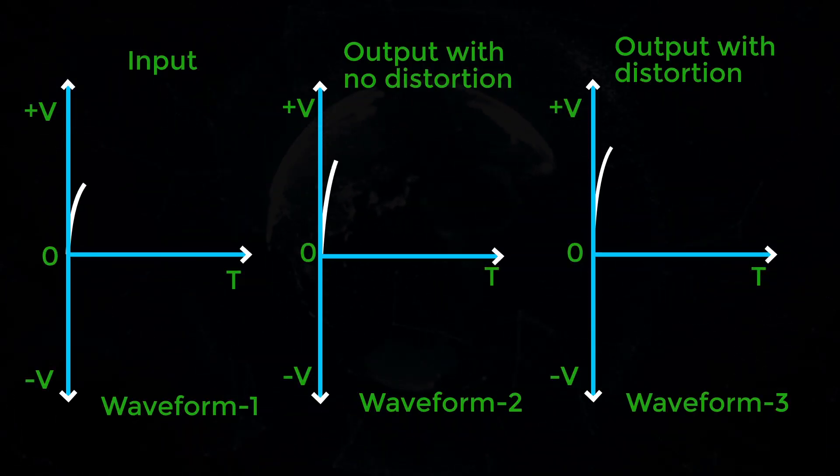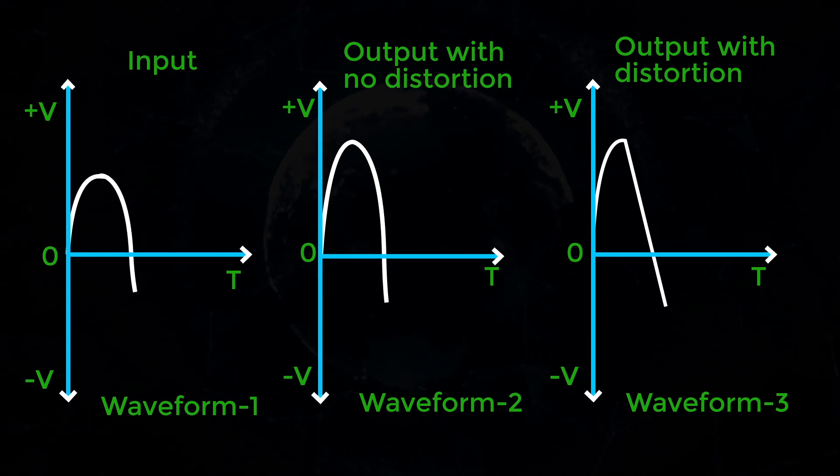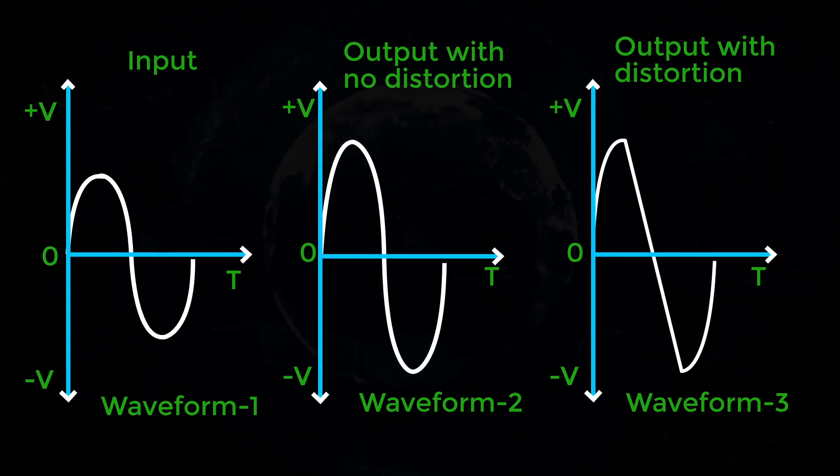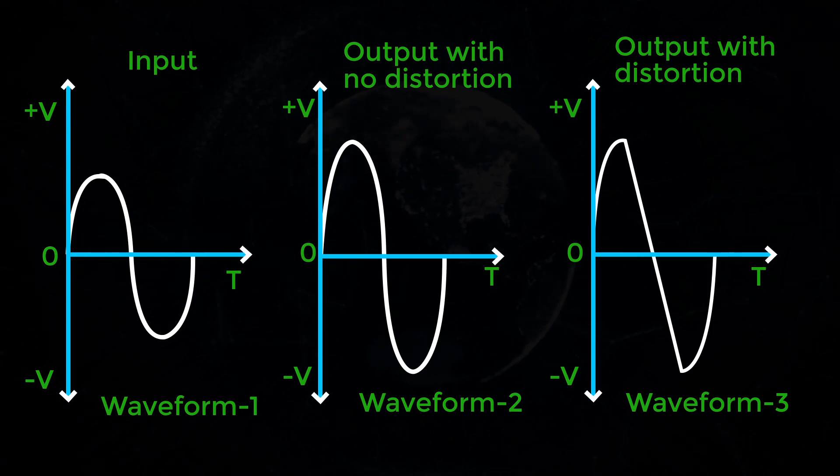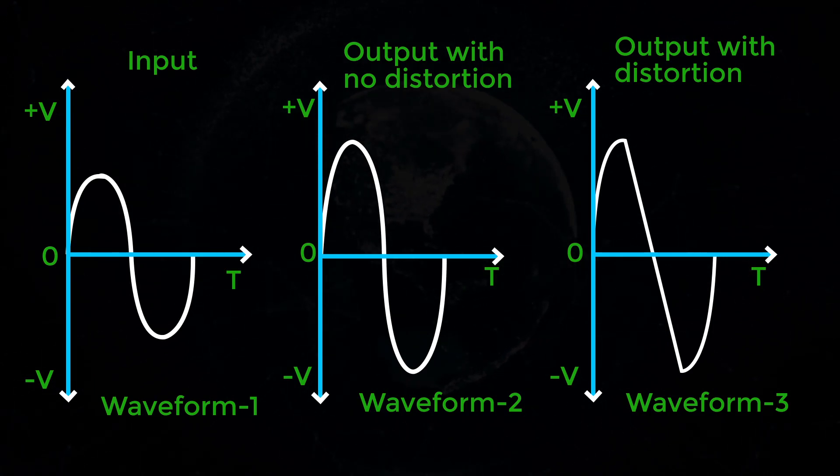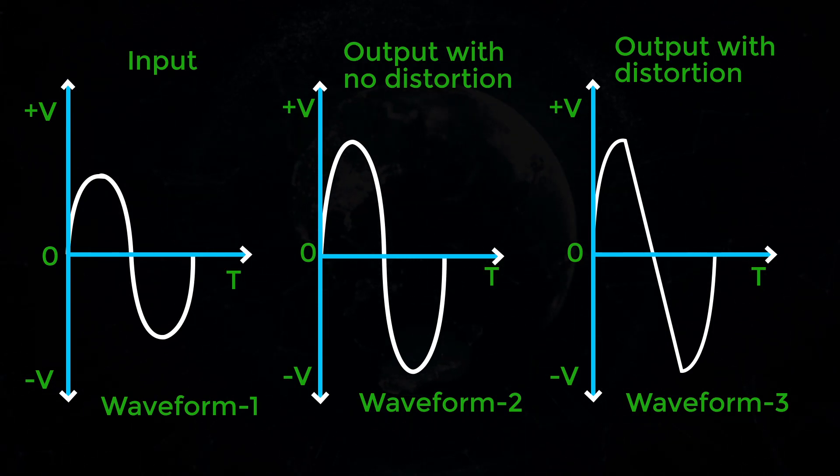In faithful amplification, the output signal must be a scaled replica of the input signal. If there is any dissimilarity between the input and output waveform, then the output is said to be distorted.